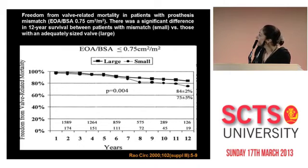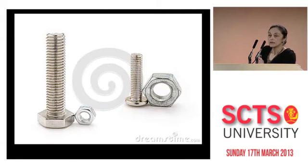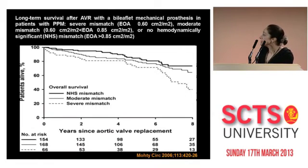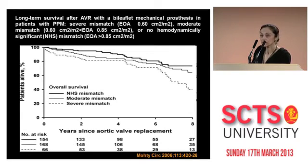Similarly, patients who had a smaller valve had less freedom from valve-related complications. In a different study by Modi and colleagues from Mayo Clinic, they looked at 400 patients who underwent aortic valve replacement and looked at the degree of mismatch — some had no mismatch, some had moderate mismatch, and some had severe mismatch.